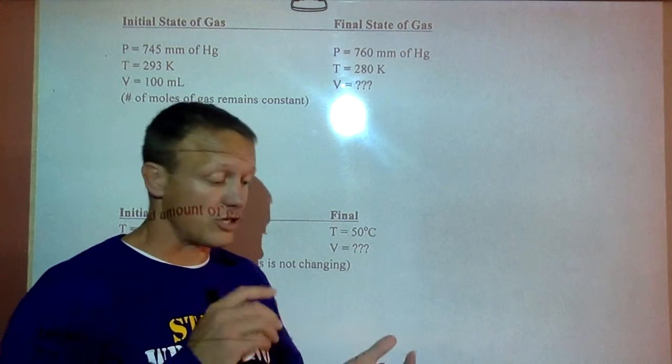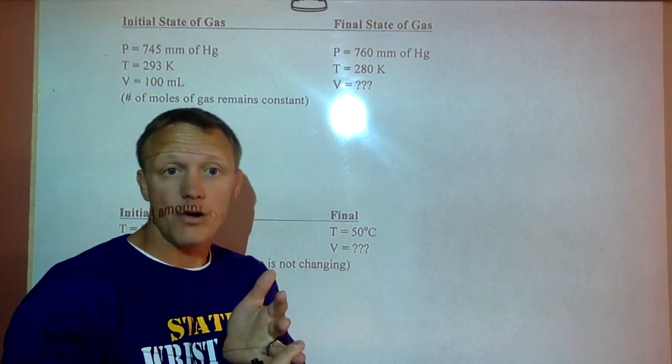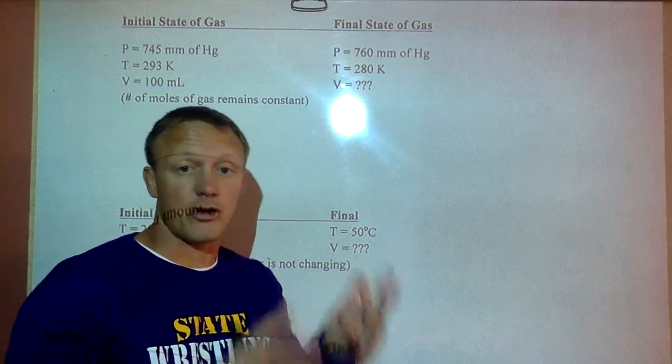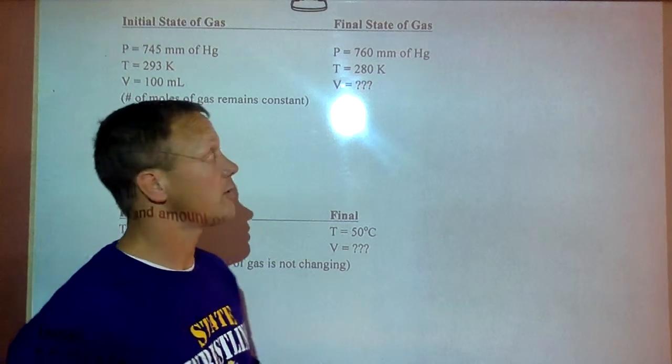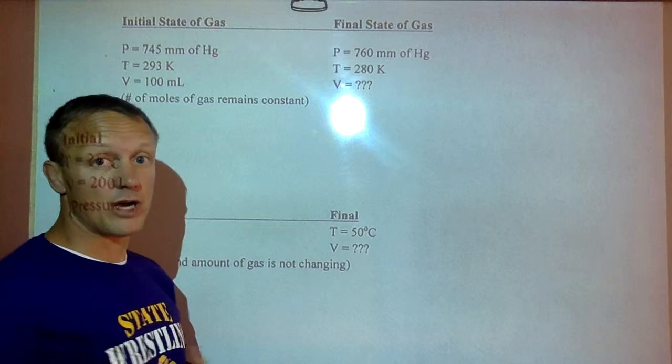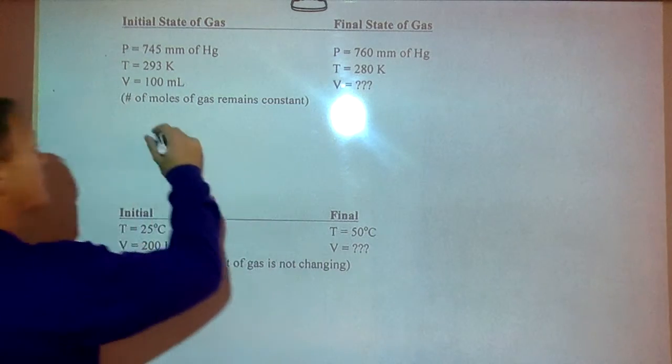Multiple things could happen. You could change the amount of gas, that's called the moles of gas. You could change the pressure, and you could change temperature. You could change all three of them. Maybe nothing would happen to change the volume. Maybe they all counteract each other. Our ratio, as we talked about in class, is this.